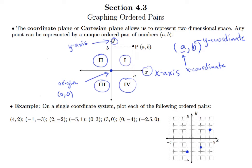Then (-5, 1): I go negative 5 in the x — that's 1, 2, 3, 4, 5 to the left — and positive 1 in the y puts me there. Next, (0, 3): a 0 for the x-coordinate means I stay put, I don't go left or right. But a 3 in the y means I go 1, 2, 3 up the y-axis.